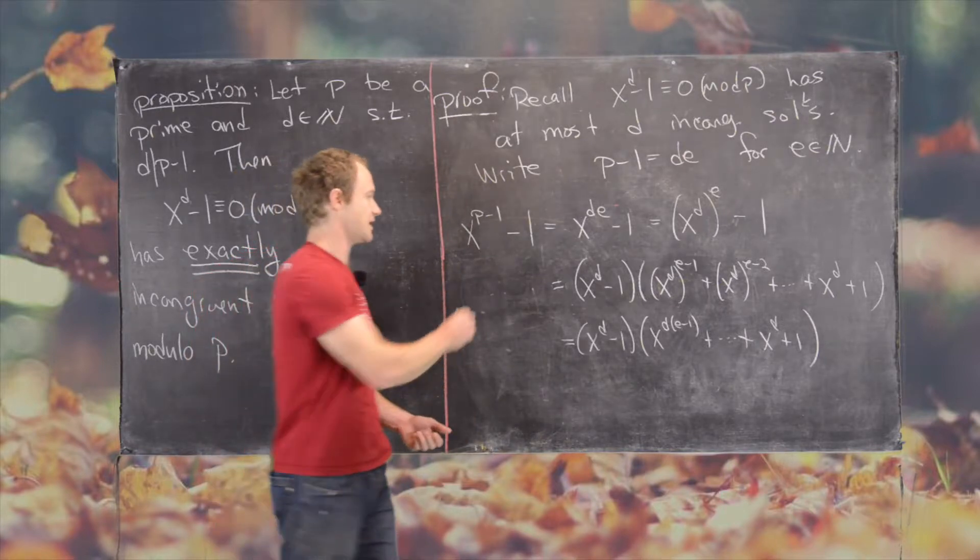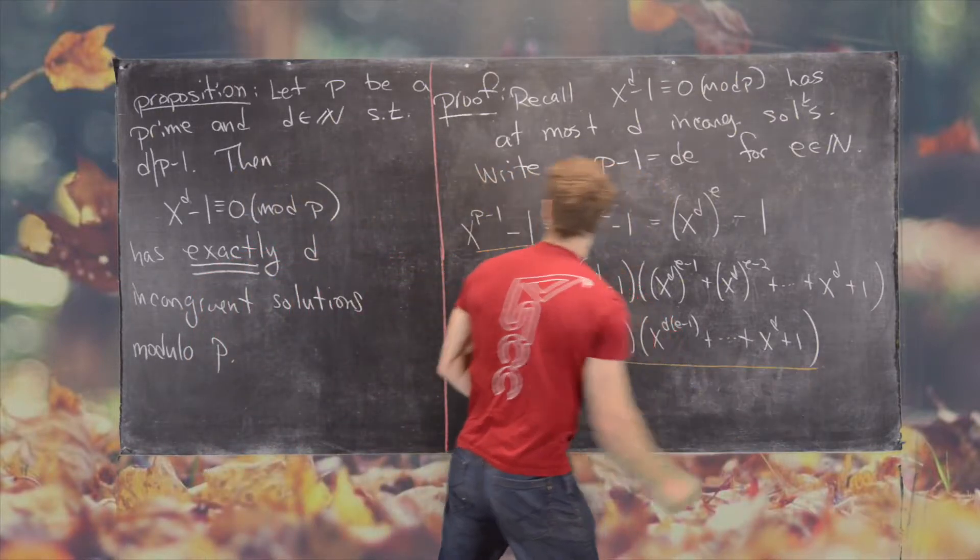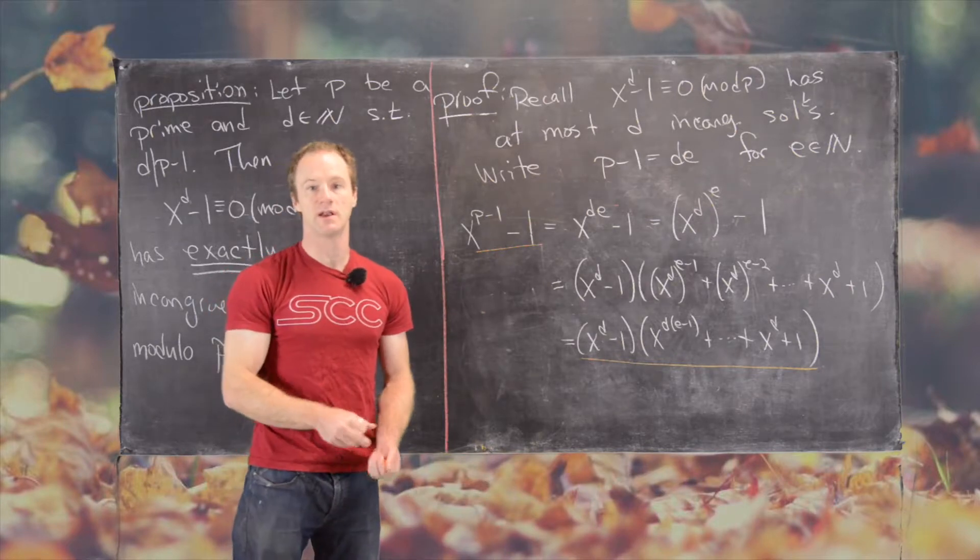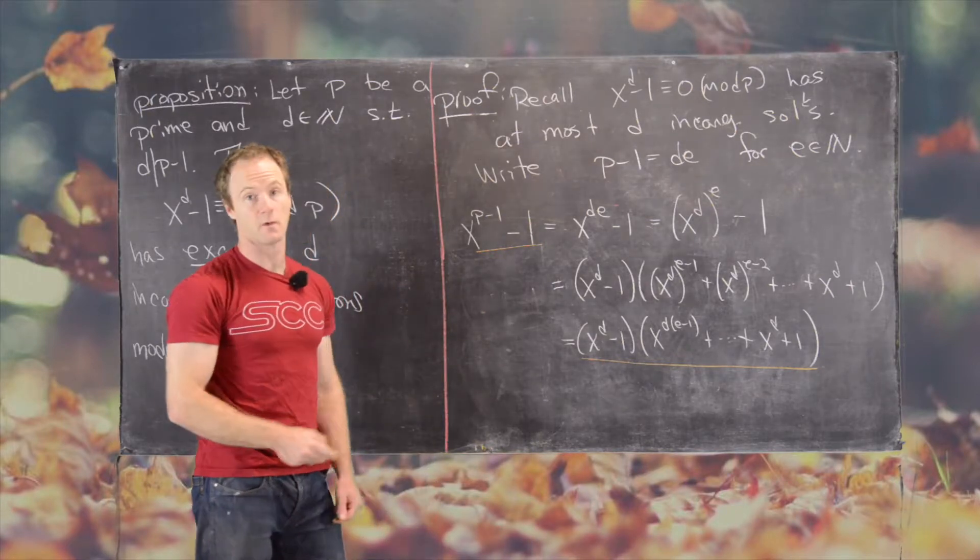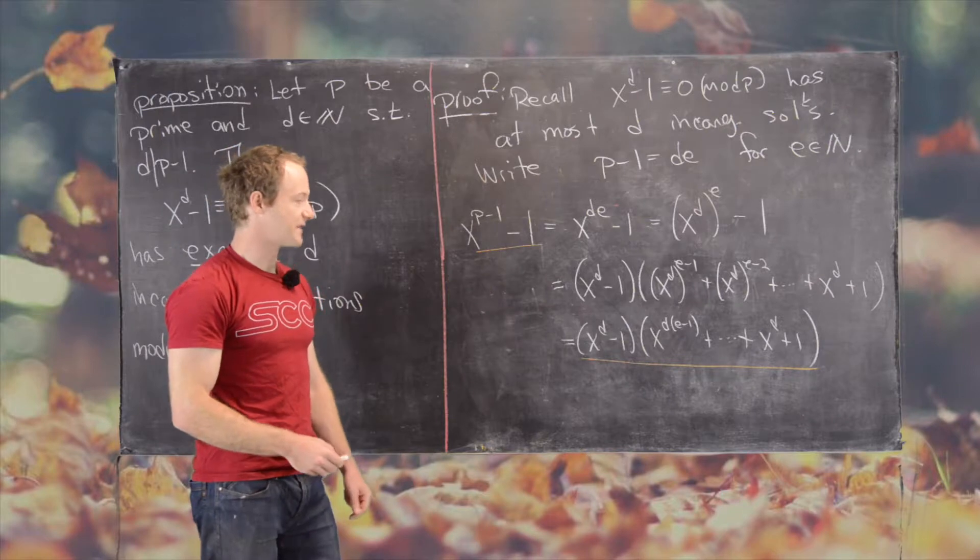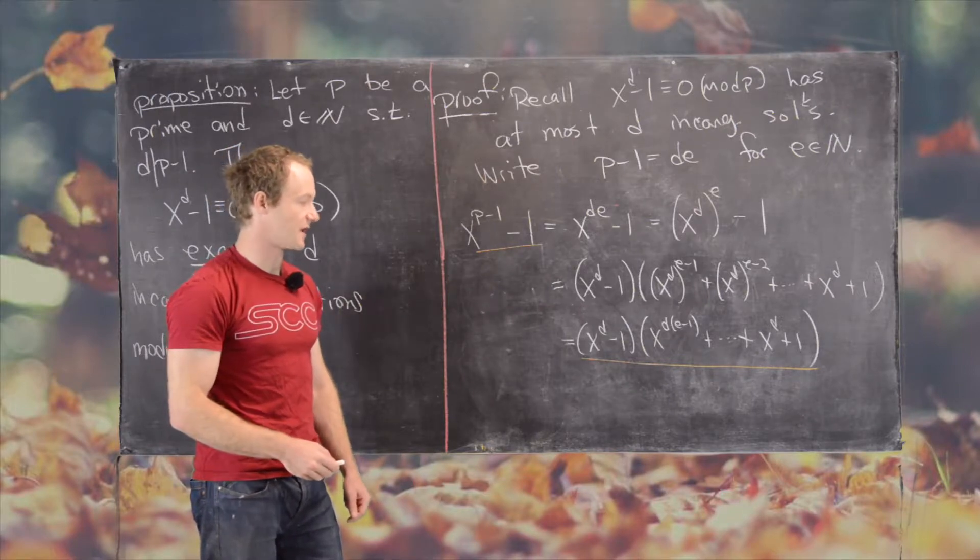So this factoring of x to the p minus 1 minus 1 will be important for our argument. We'll take this factoring and then we'll also notice the following.